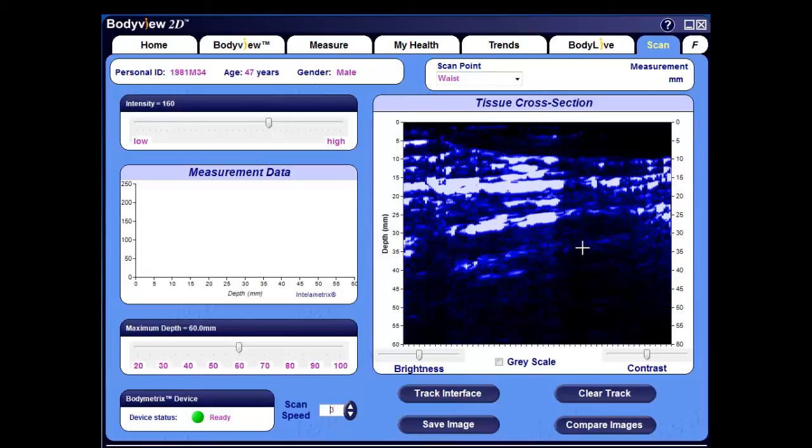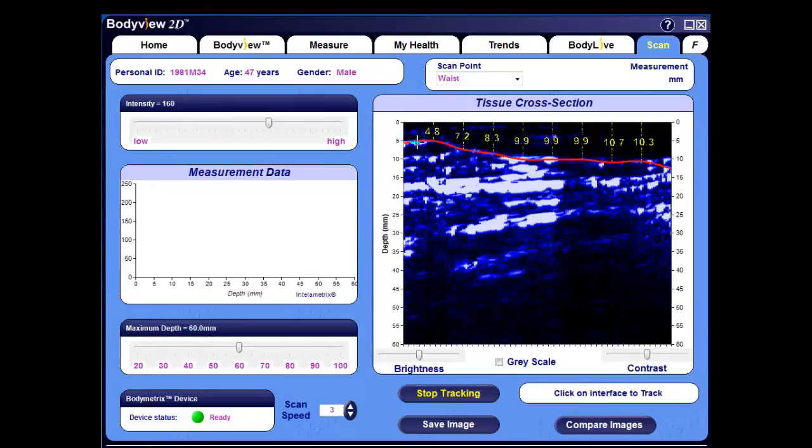We can also track the various interfaces and quantify both the superficial as well as the deep adipose tissue layers. Click on the Track Interface button and place your cursor in the center of the fascia signal as shown, and then click. You can adjust the tracking by setting your own data points by moving your cursor to the desired area, and then clicking again to adjust it. Once you're satisfied with the tracking, click the Stop Tracking button.